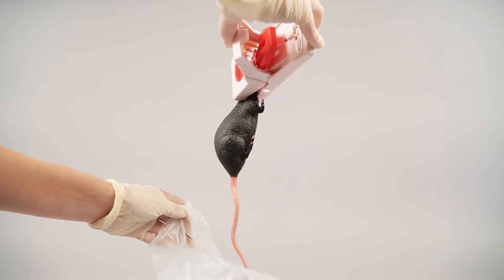To empty the trap, open by slightly squeezing the bars together. There is no need to touch the dead rat. Double bag the catch and place in a secure bin.